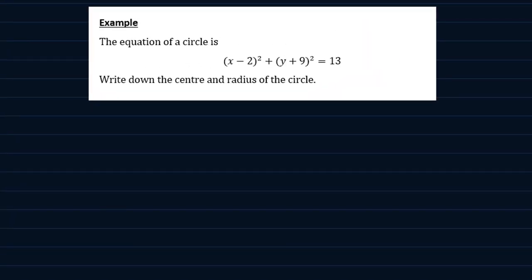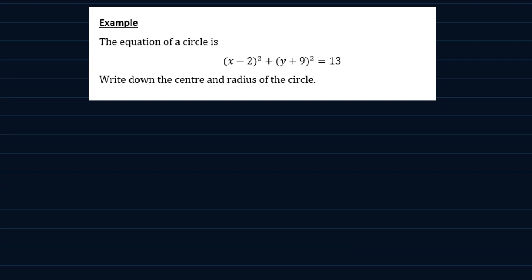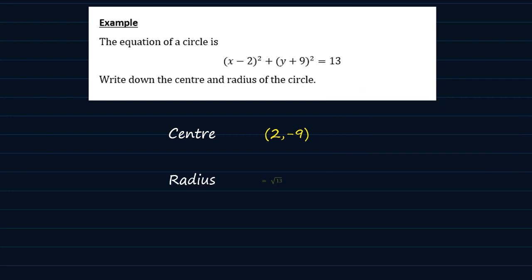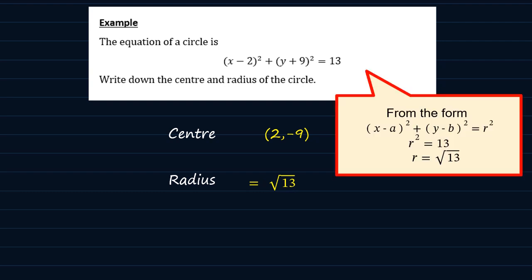Here's another example. The equation of a circle is (x minus 2) squared plus (y plus 9) squared is equal to 13. Write down the center and radius of the circle. We're going to take out the coordinates of the center, which in this case is (2, minus 9). And for the radius, it's going to be the square root of 13.